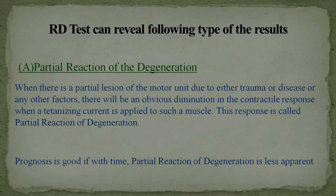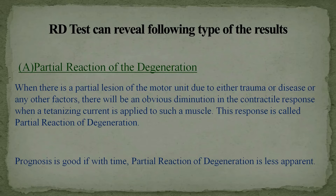The RD test can reveal three types of results. First, partial reaction of degeneration: when there is a partial lesion of the motor unit due to trauma, disease, or other factors, there will be a diminished contractile response when tetanizing current is applied. This is called partial reaction of degeneration. Prognosis is good if the partial reaction of degeneration becomes less apparent over time.